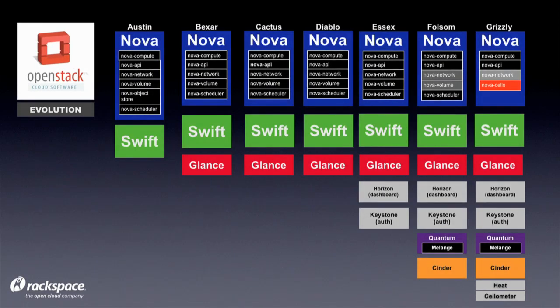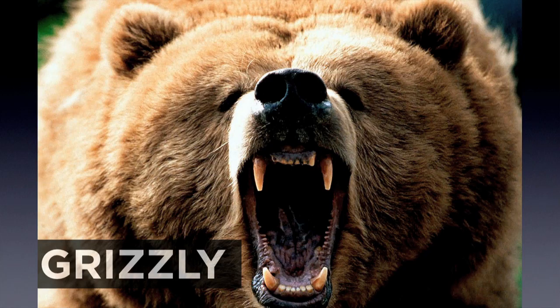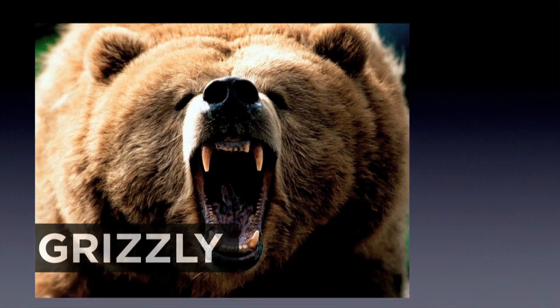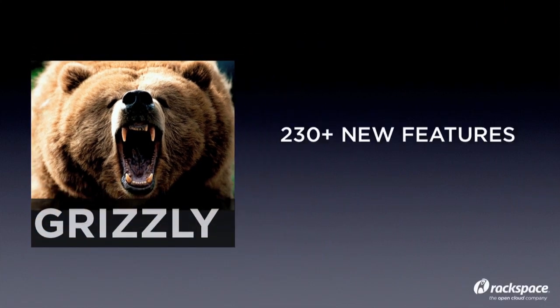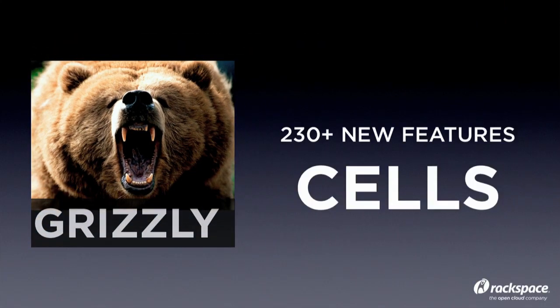We've got the whole evolution of OpenStack from Austin all the way up to Grizzly. One of the key features is Nova Cells in Grizzly, which has 230-plus new features. One of those key features is Nova Cells.